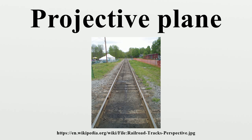The extended structure is a projective plane and is called the extended Euclidean plane or the real projective plane. The process outlined above, used to obtain it, is called projective completion or projectivization. This plane can also be constructed by starting from R3 viewed as a vector space.